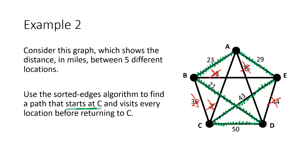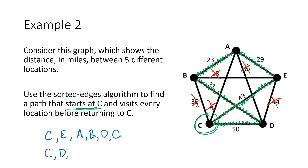Now that I have my complete circuit and know the starting point is C, I can interpret the answer. Starting at C, I have two options — forward or backwards. Going forward: C to E, then E to A, then A to B, then B to D, then back to C. Or in reverse: C to D, then to B, then to A, then to E, then back to C. These are both the same circuit in reverse order, so either one is a correct answer — you don't have to write down both.